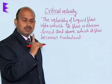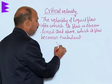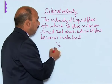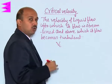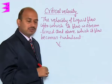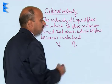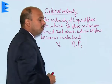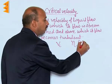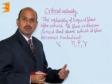The critical velocity Vc depends on the coefficient of viscosity eta, the density of the liquid rho, and the radius of the tube through which it is flowing.